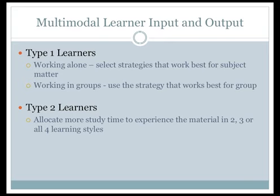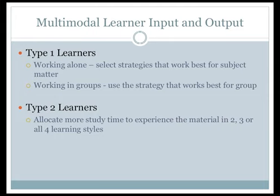Multimodal learner input and output. Multimodal preferences dominate the preferences for all populations and are clearly the most used set of preferences when making decisions about learning. Usually one-third of respondents are in the four-part VARK set, and another large group are those with two to three preferred modalities. When working alone, Type 1 learners select strategies that work best for the subject matter; when working in groups, they tend to use the strategy that works best for the group. Type 2 learners tend to allocate more study time in order to experience the material in 2, 3, or all 4 of the learning styles. If you believe you are multimodal, think about which type — 1 or 2 — you would lean toward.